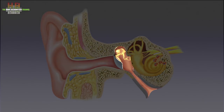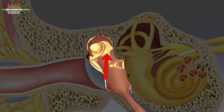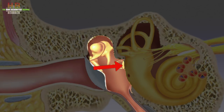On the other side of the eardrum we find three small bones: hammer, anvil and stirrup. They work as an impedance converter, more or less like a gearbox of your car. And the last bone, the stirrup, touches an aperture called the oval window of the cochlea.